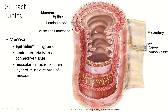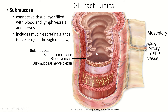The muscularis mucosa is a really thin layer of muscle that holds the mucosa in place and separates it from the submucosa. The submucosa is a pink layer that looks like it's full of blood vessels. It is primarily connective tissue — there's some adipose, some areolar connective tissue — and it's got lots of blood vessels running through it.